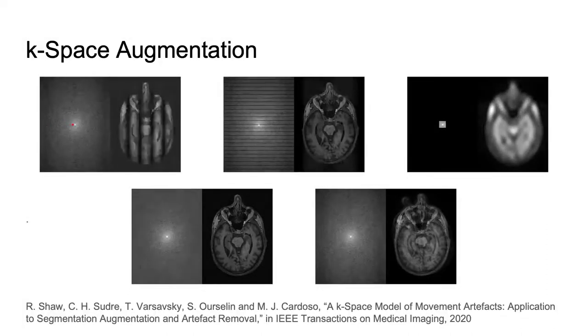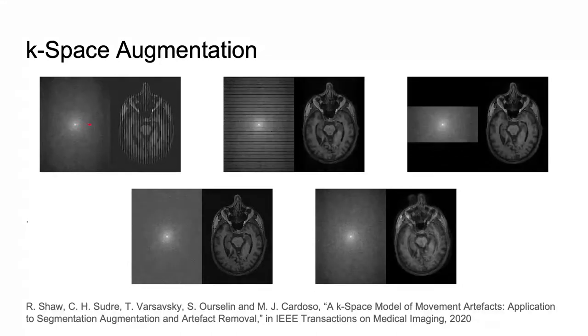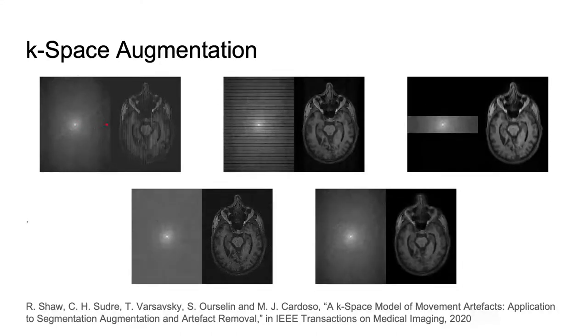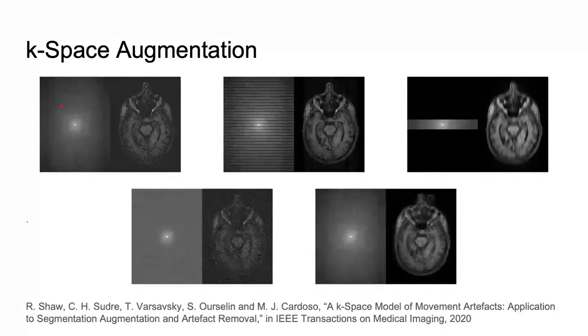Blurring artifacts can be observed when acquiring data at a lower resolution prior to resampling. We apply a low-pass filter by truncating the k-space to simulate this effect.